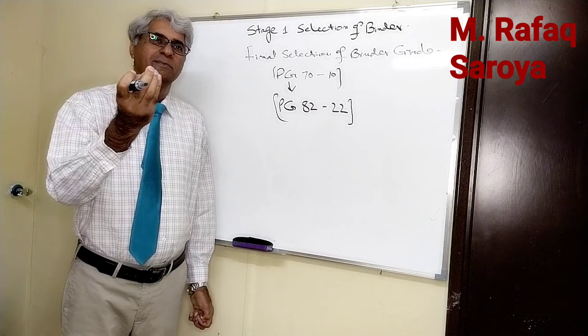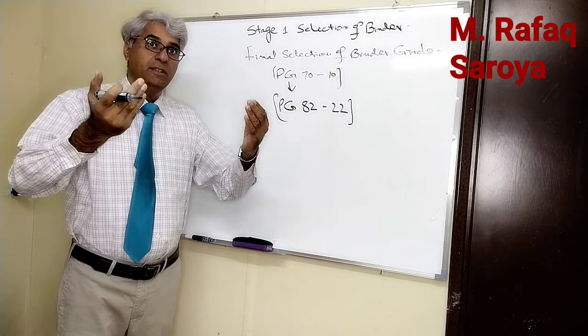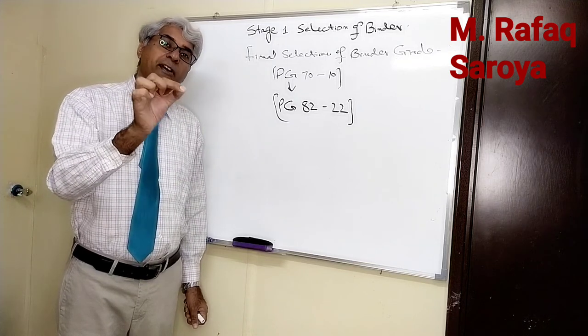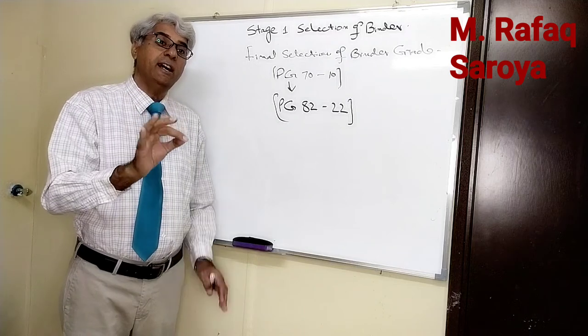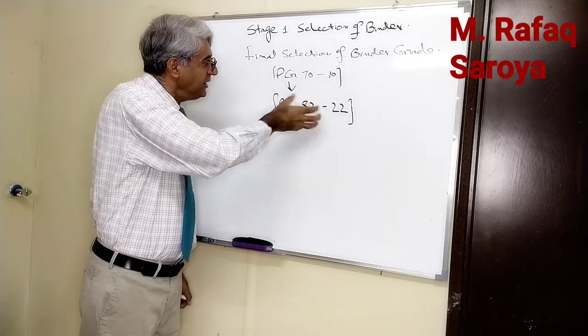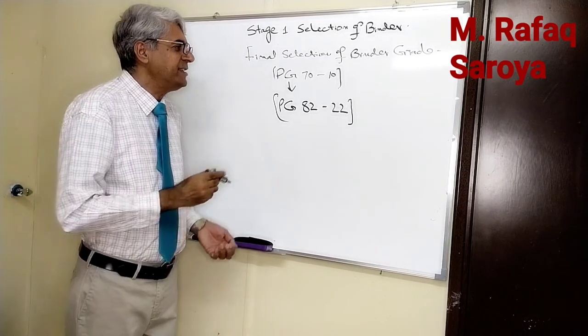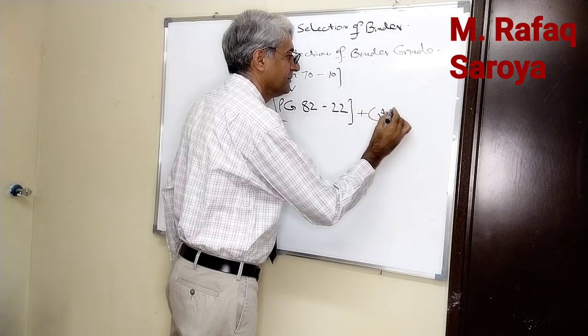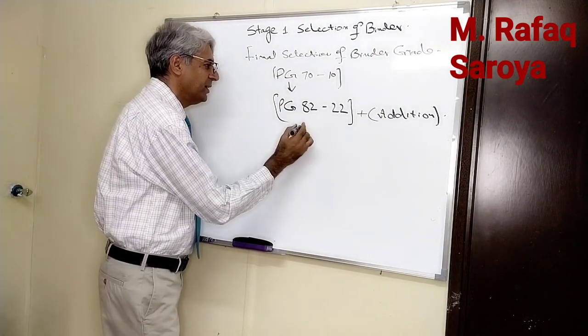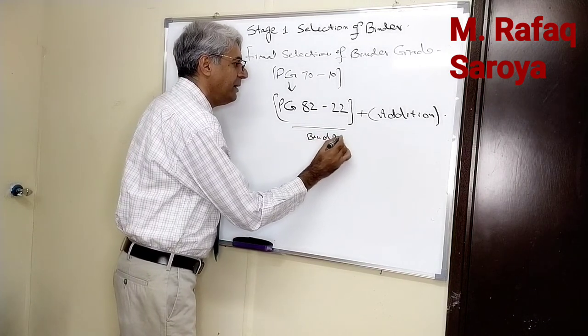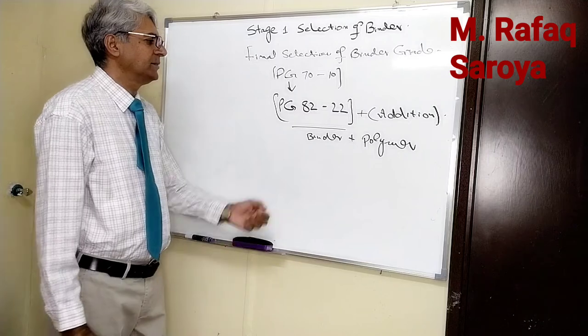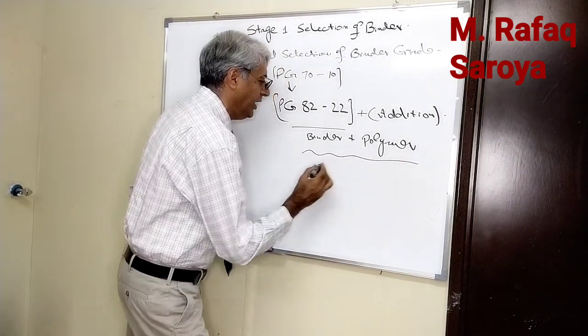One thing remaining: in order to enhance the working properties so that our mix size should not rut, our mix size should not get cracked, we are going to change the characteristics of the binder by some addition. Suppose it is my binder, some percentage of polymer is added. Then the end product is known as polymer modified binder.